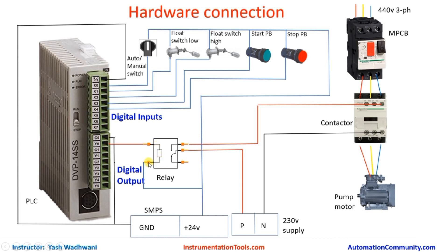The other terminal of the relay we connect to 24V supply. On the output side of the relay, we give the phase to the common of the relay, and the NO contact of the relay we connect to A1 of the contactor. A2 of the contactor we connect to neutral. So when Y0 is ON, the relay will be ON, the NO terminal will close, power will flow from phase through common to NO to A1 of the contactor, and the motor will operate.